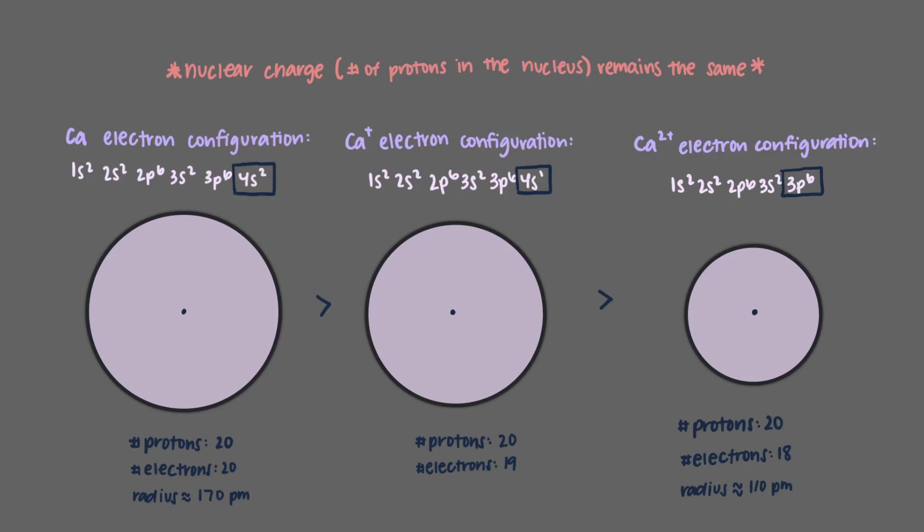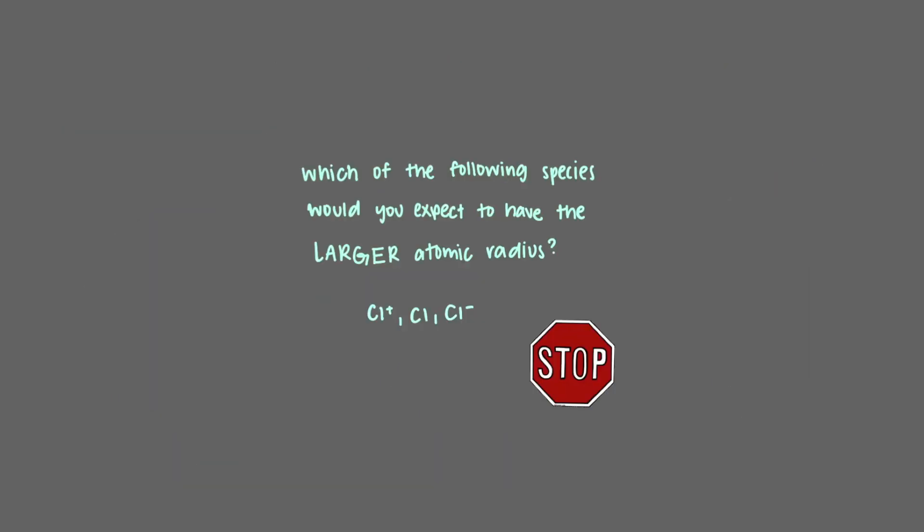Now let's consider atoms that gain electrons. Which of the following species would you expect to have the larger atomic radius? When electrons are added to an electron cloud, there is increased electron-electron repulsion.